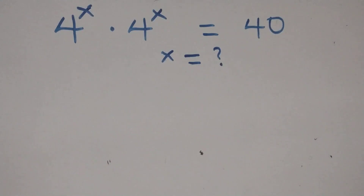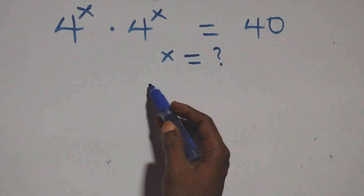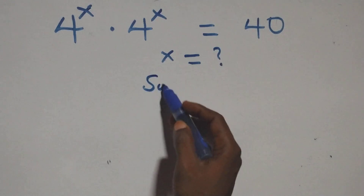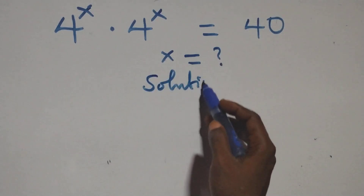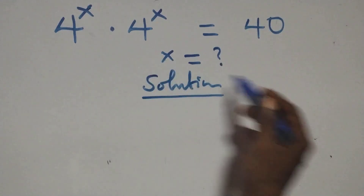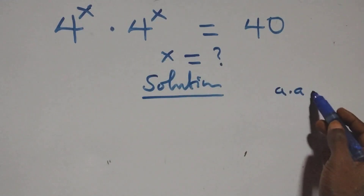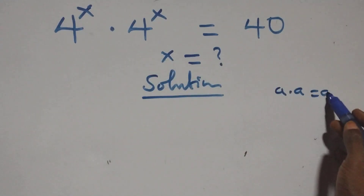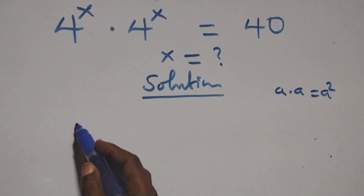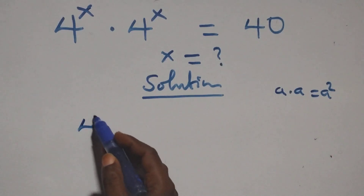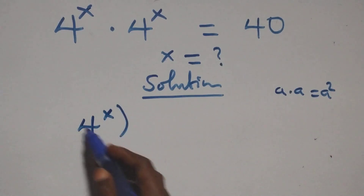Hello, welcome. How to solve this nice exponential equation. From what we have here, a times a is the same thing as a squared. Multiplying, we can raise it as 4 raised to power x plus square.